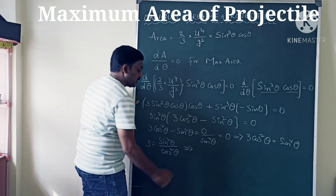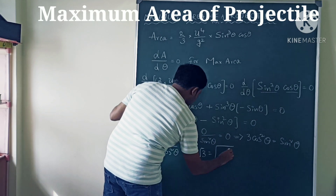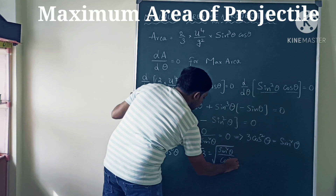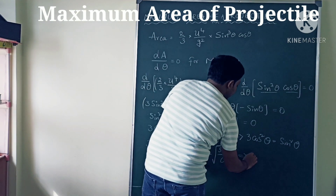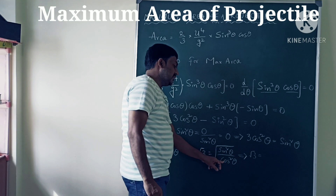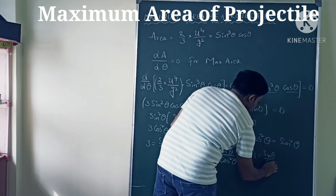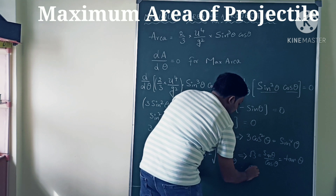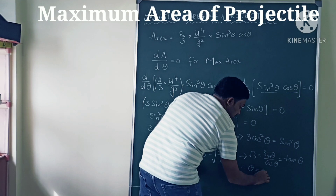Taking the square root on both sides: √3 = √(sin²θ / cos²θ), and the square and root cancel to give √3 = sinθ / cosθ, which equals tanθ. Therefore tanθ = √3, and so θ = 60 degrees.